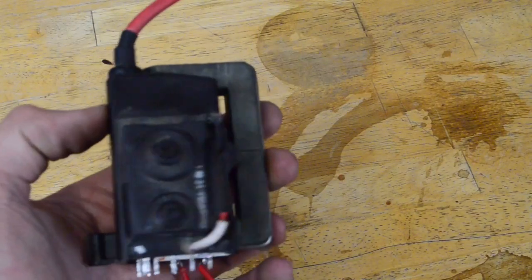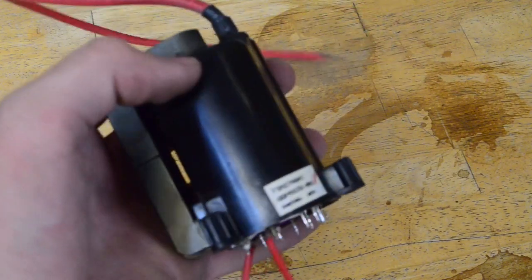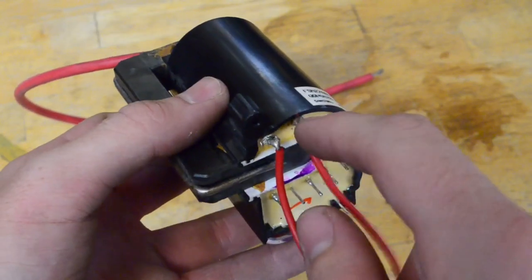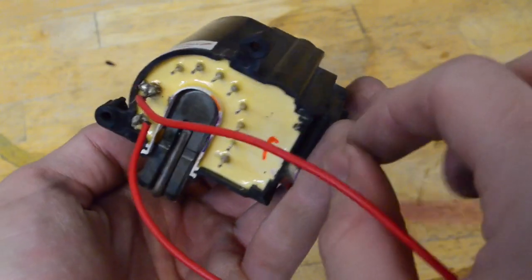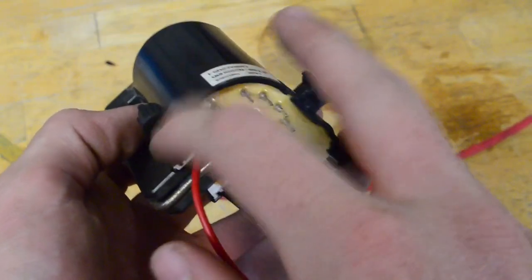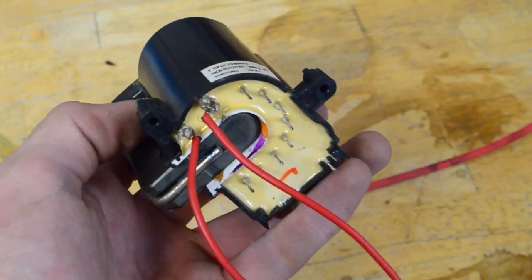For this project, I have this flyback transformer that I desoldered out of an old CRT-TV. As you can tell, I have two wires soldered on down here. These are the first two pins, and this is going to be the primary coil that I refer to in the circuit.